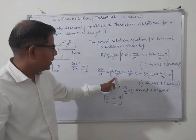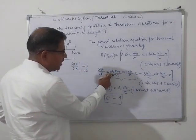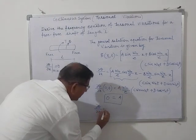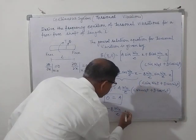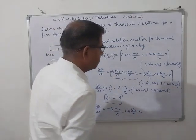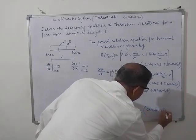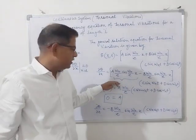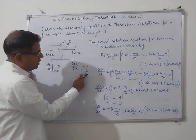With A = 0, the entire first term in ∂θ/∂x becomes zero. We rewrite the equation as: ∂θ/∂x = −B·ωₙ/c · sin(ωₙ/c · x) · (C sin(ωₙ t) + D cos(ωₙ t)). Now we apply the second boundary condition: ∂θ/∂x = 0 at x equal to l.